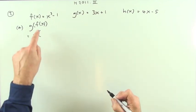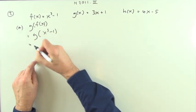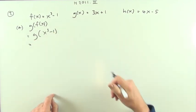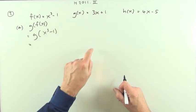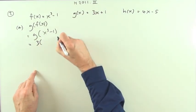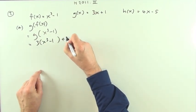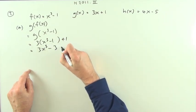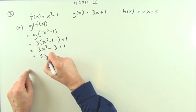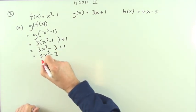acts on whatever f of x produces. f of x produces x cubed minus one, so g acts on that. And what does g do? Whatever you pop into it, it'll take that and do three times it then add one. So if you pop this into it, it'll do three times that and then add one. Tidy it up: 3x cubed minus 3 plus 1, 3x cubed minus 2. Well that wasn't too bad.